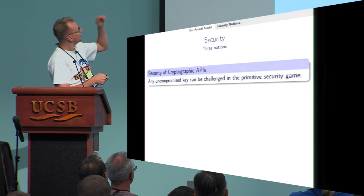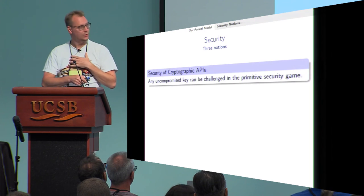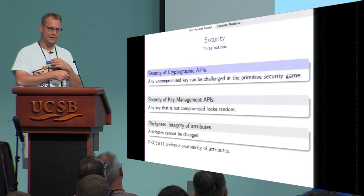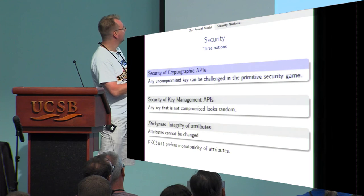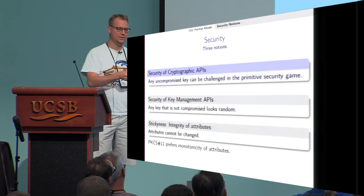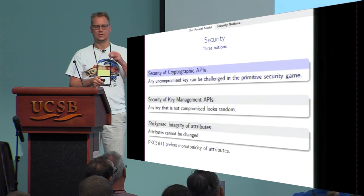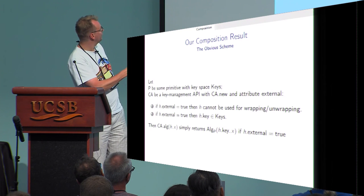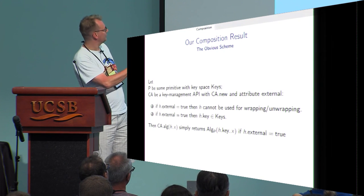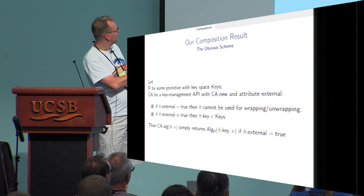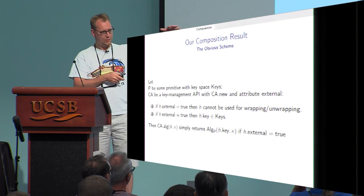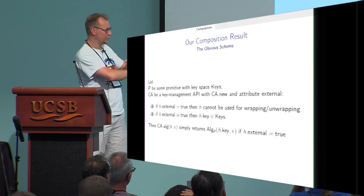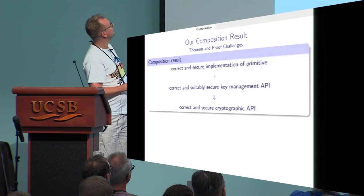Security means any uncompromised key can be challenged in the primitive security game. Security of the key management API means any key that's not compromised looks random — the same as the KEM notion. Stickiness means attributes stay the same, though in PKCS they can change monotonically, which is slightly different. Our composition result is the obvious one: if you use one set of keys only for wrapping and another set only for the primitive, the composition is secure — you have a clean layering.